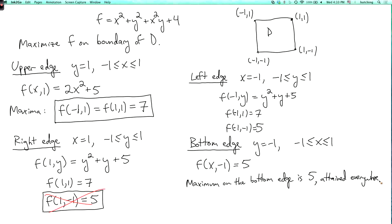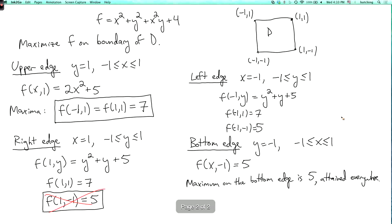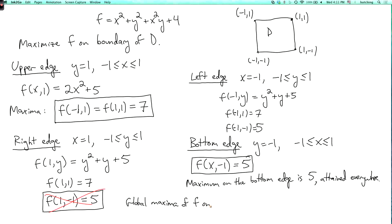So we're done — there are no more candidates. The critical point in the interior is where f equals 4 at the origin. On the upper edge, f is maximized at the two corner points where f equals 7. On the right and left edges, the maximum is at corners we've already seen. On the bottom edge, f equals 5 everywhere, but none of these candidates win because 7 is bigger than 5. So the winner is the two points (-1, 1) and (1, 1). The global maxima of f on d are the points (-1, 1) and (1, 1), where f equals 7. By the theory, anywhere else on this domain, f is going to be less than 7.